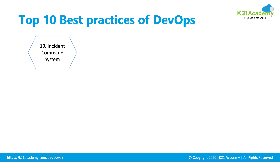Best practice number 10 is the Incident Command System. The DevOps team should definitely have an incident command system. If there are any issues or problems occurring, you should always have a ticketing system and a tool to record that. Based on that, you can do your RCA — root cause analysis — to find out how the problem occurred and mitigate the risk next time.